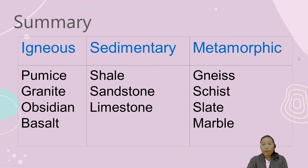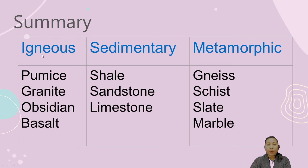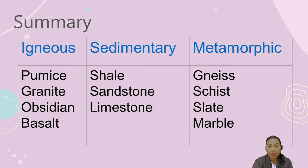Metamorphic rock is formed from sedimentary and igneous rocks. Igneous rocks come from the volcano — lava and magma. Magma is the intrusive kind of igneous rock, and lava is the extrusive kind. Sedimentary rocks are formed from sediments — particles of stones that settle down — and can form on land or in water.